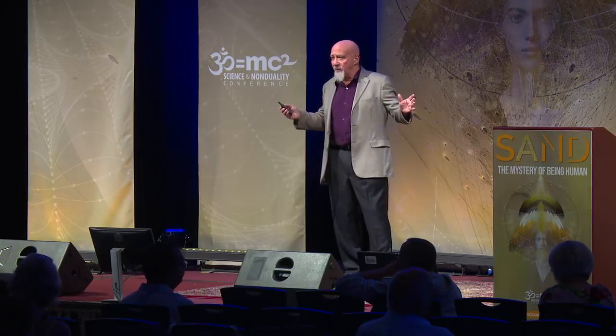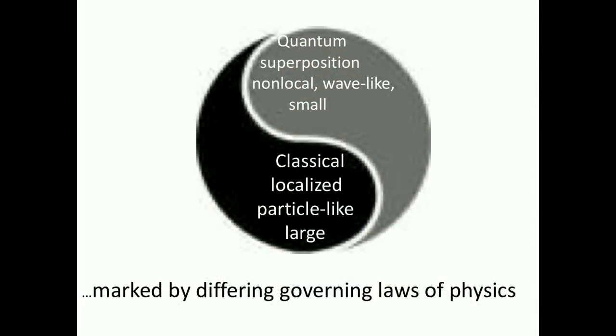In the quantum world, generally small but not necessarily, things can be in quantum superposition of multiple coexisting possibilities. They're not in any one place. Things can be separated over space and time, nonlocality, nonlocal entanglement, for example. Particles can act wave-like, more like waves than particles. And they tend to be small, although the size cutoff can vary.